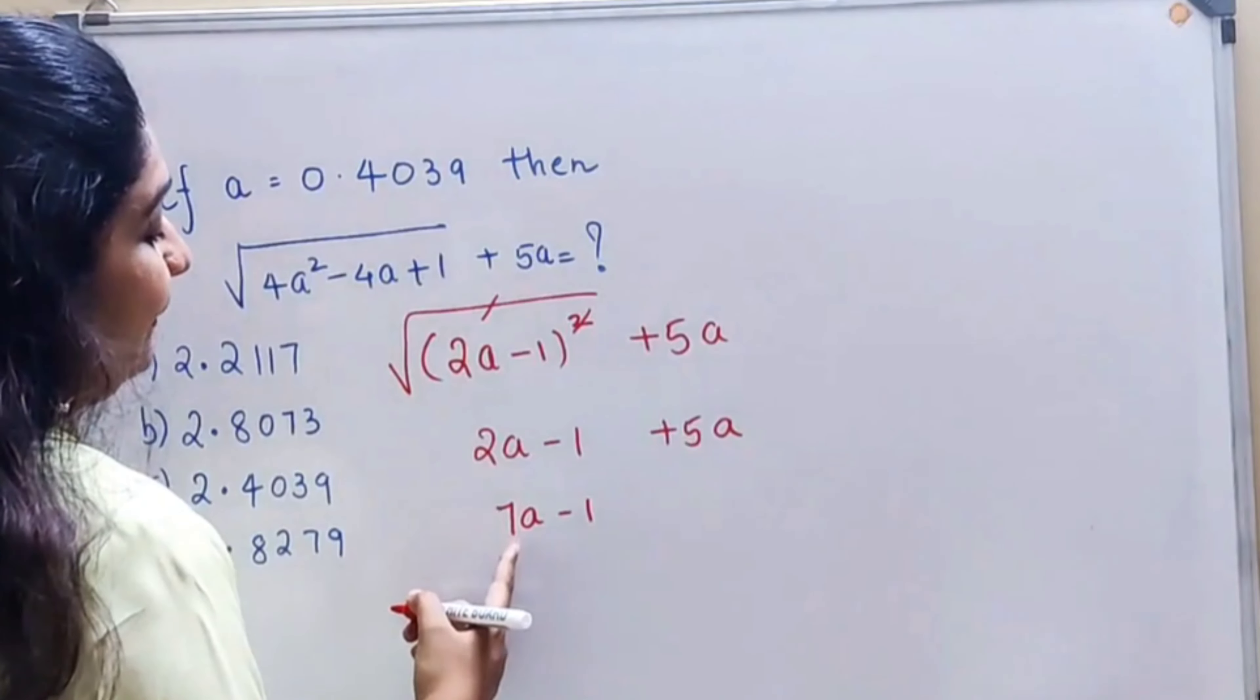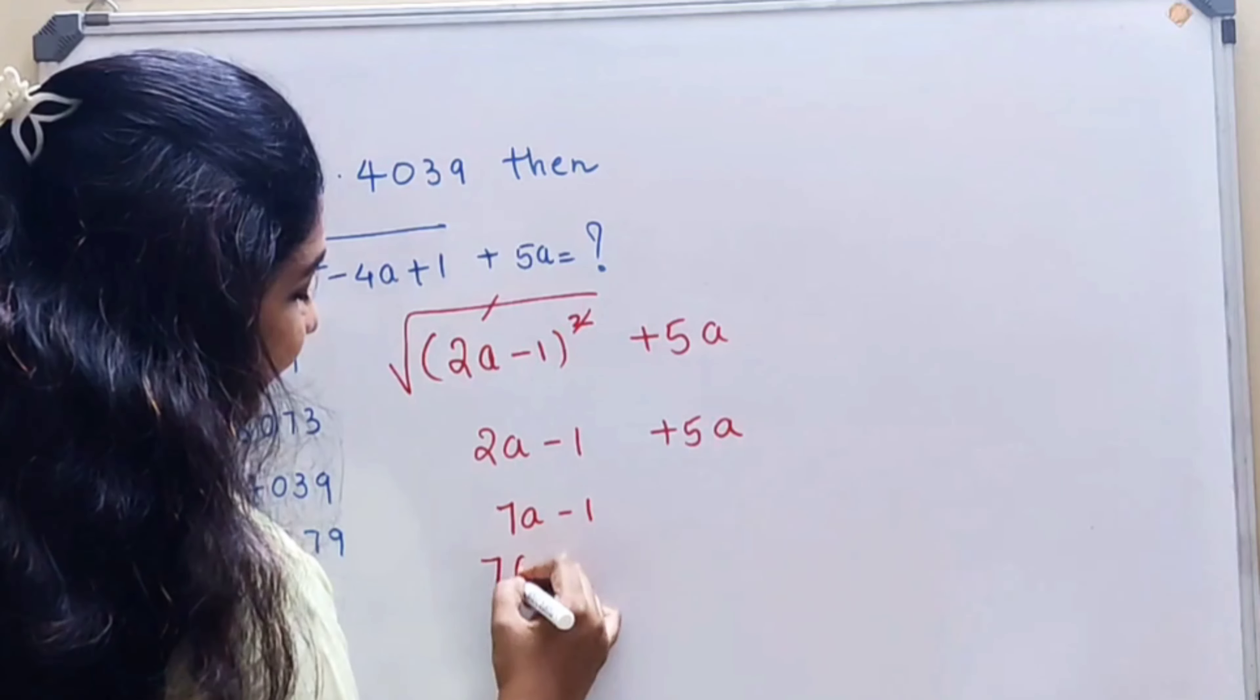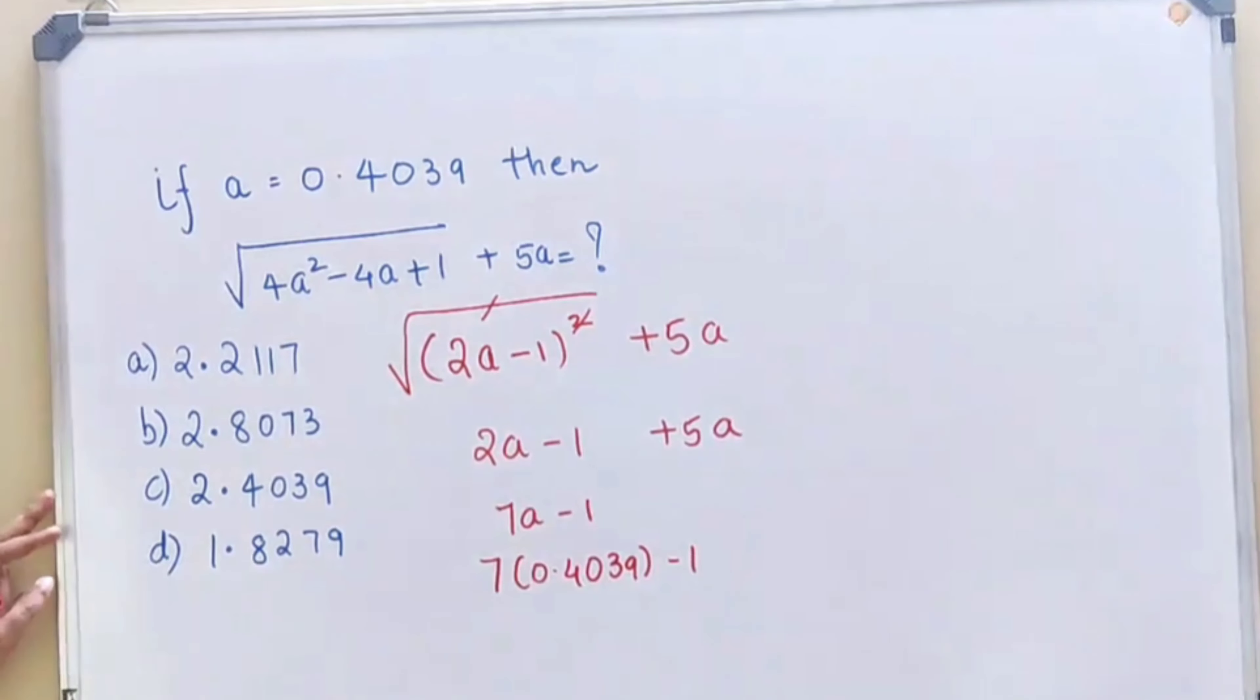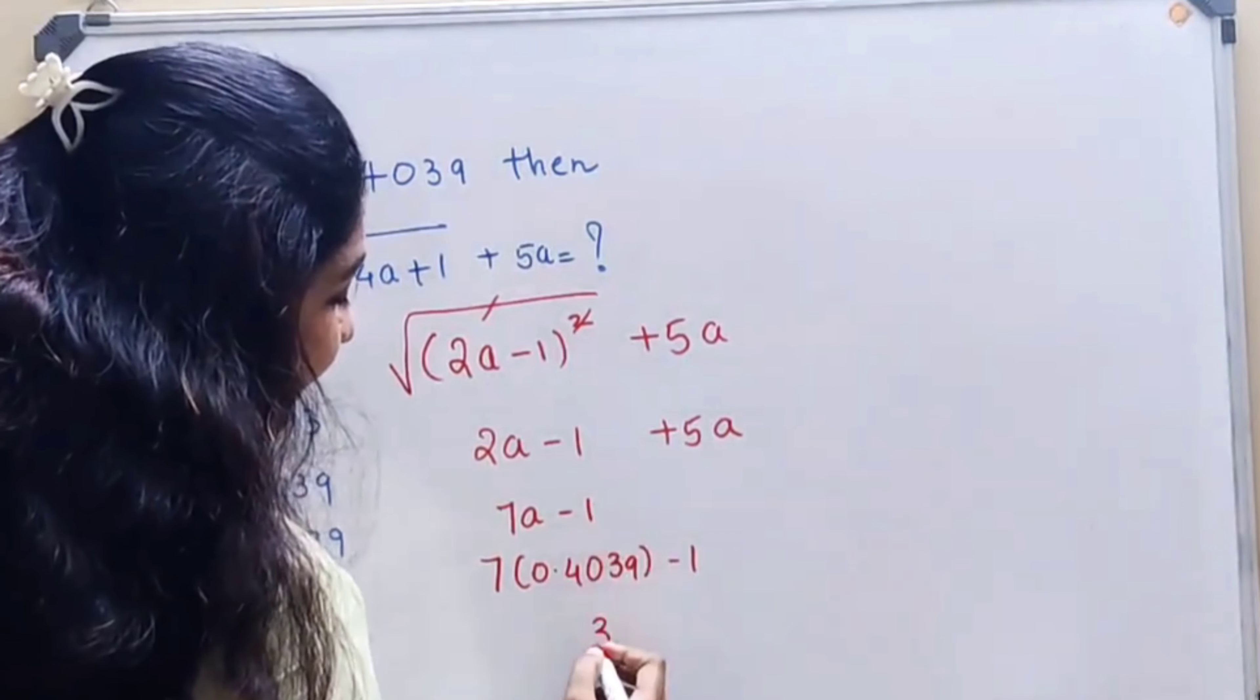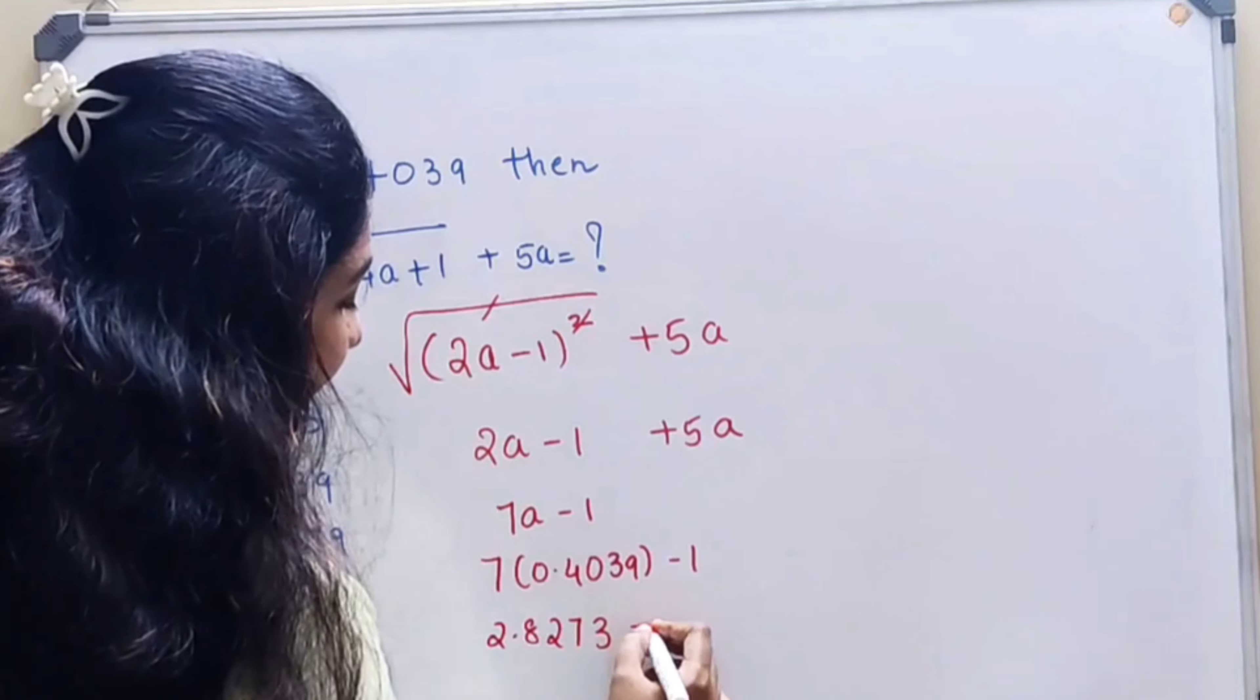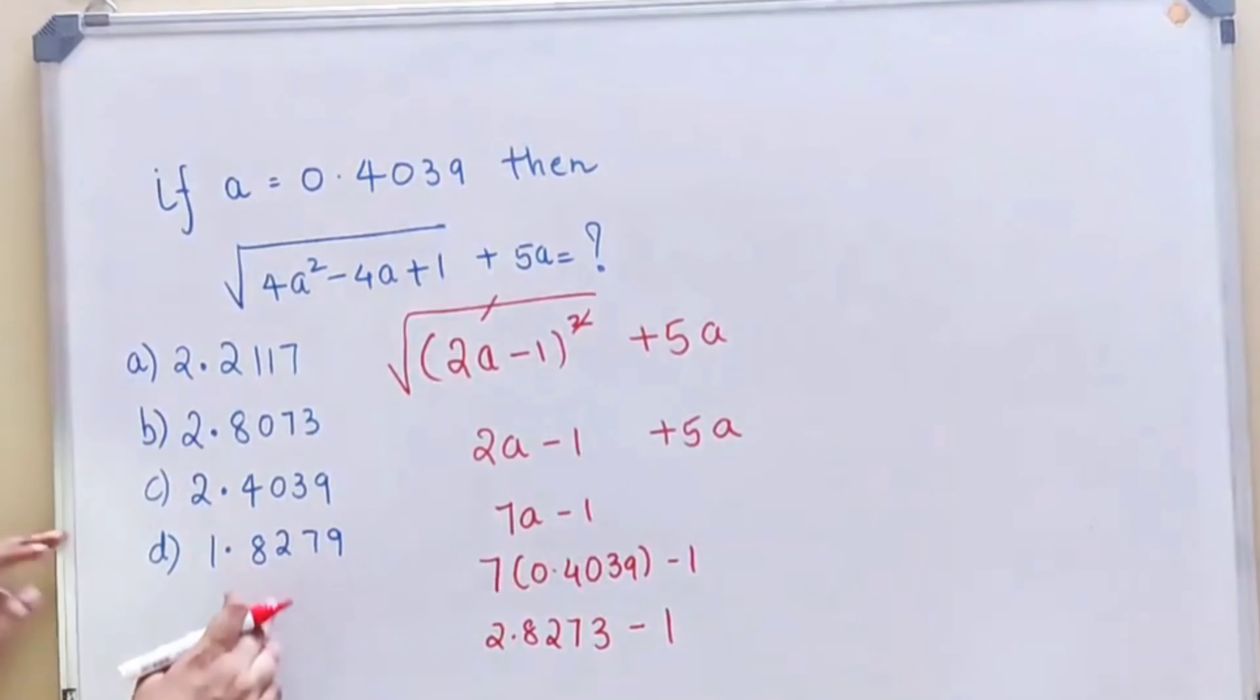Now if you look closely, when I multiply 7 with 0.4039 minus 1, so what will happen over here is 3, 6 carry, then 7, 2, 8, and 2 minus 1.